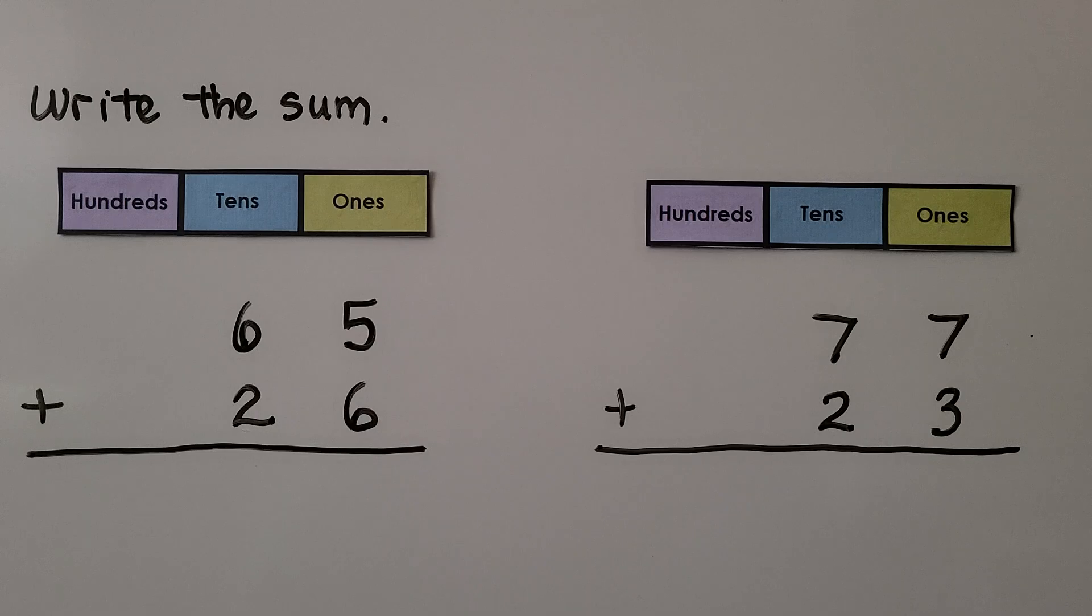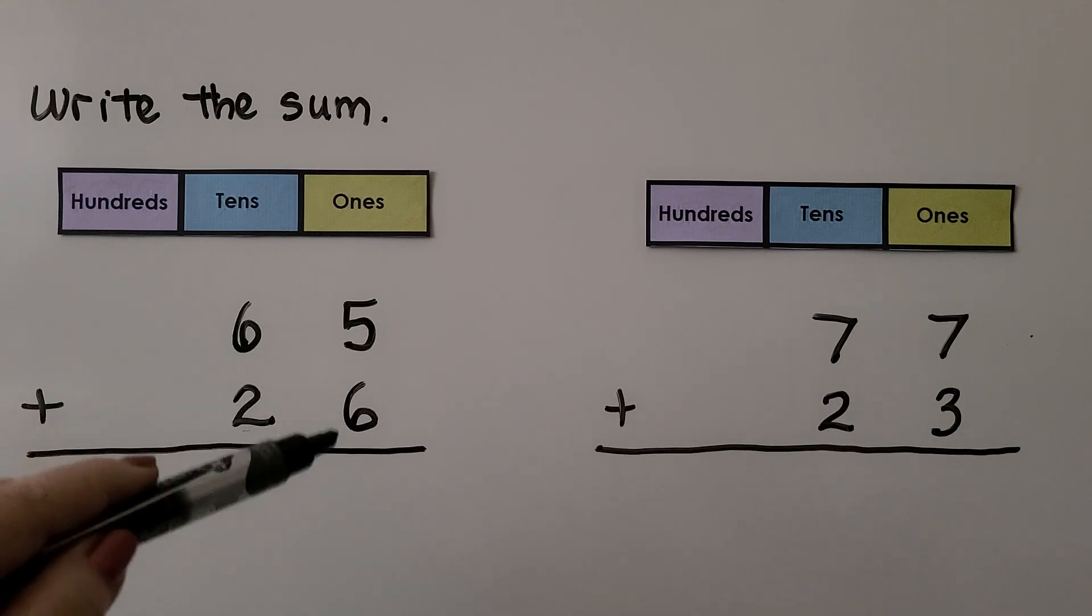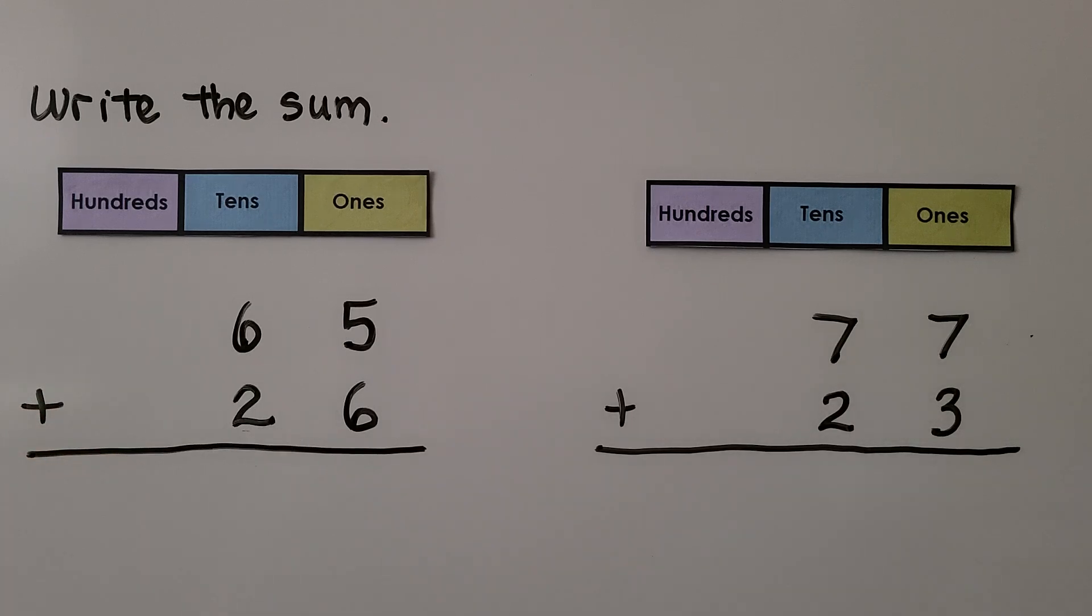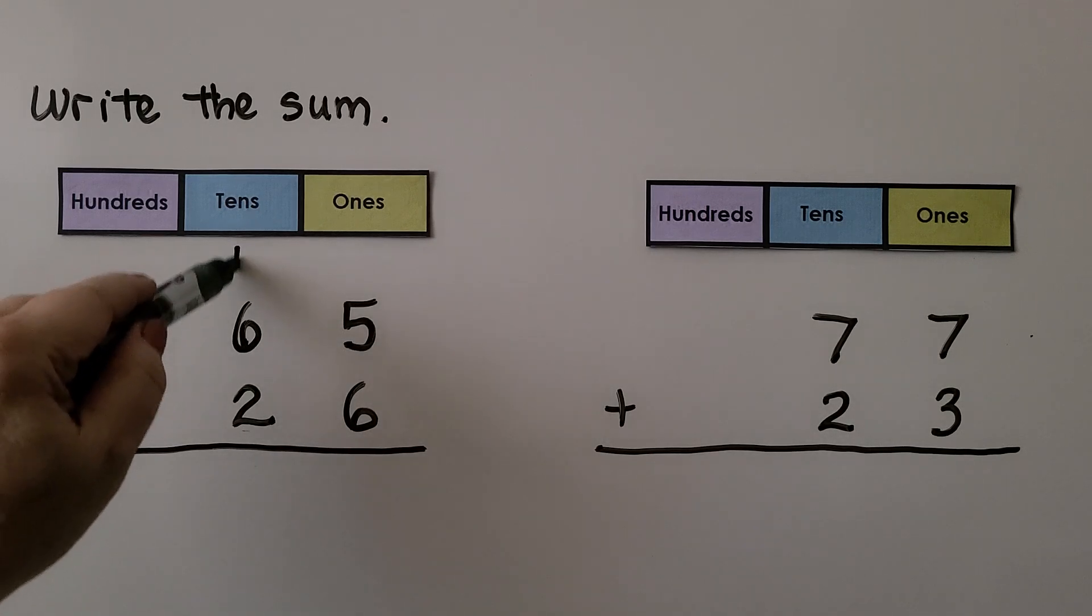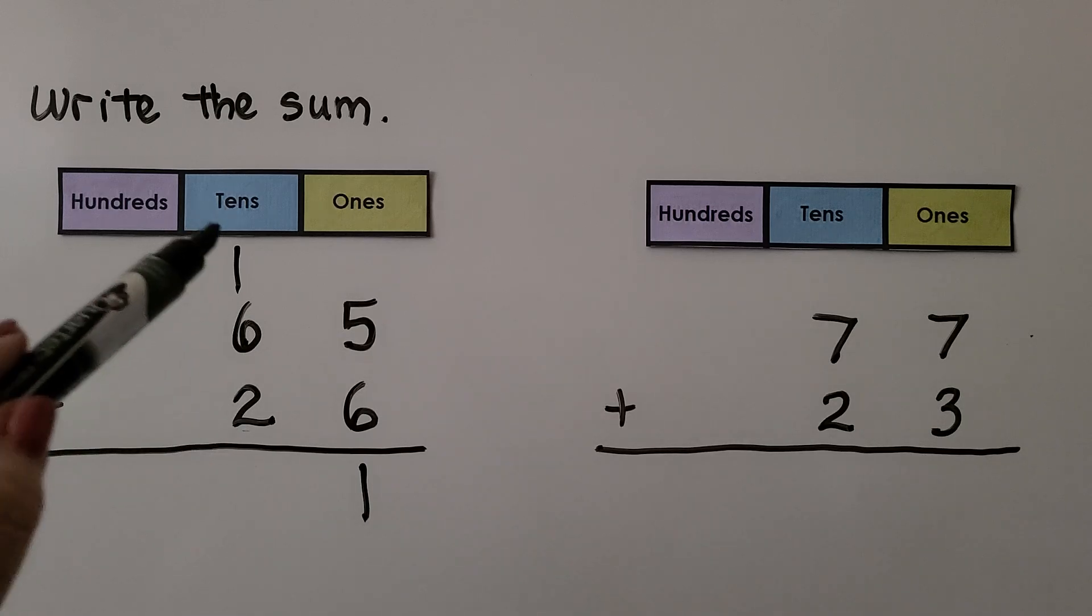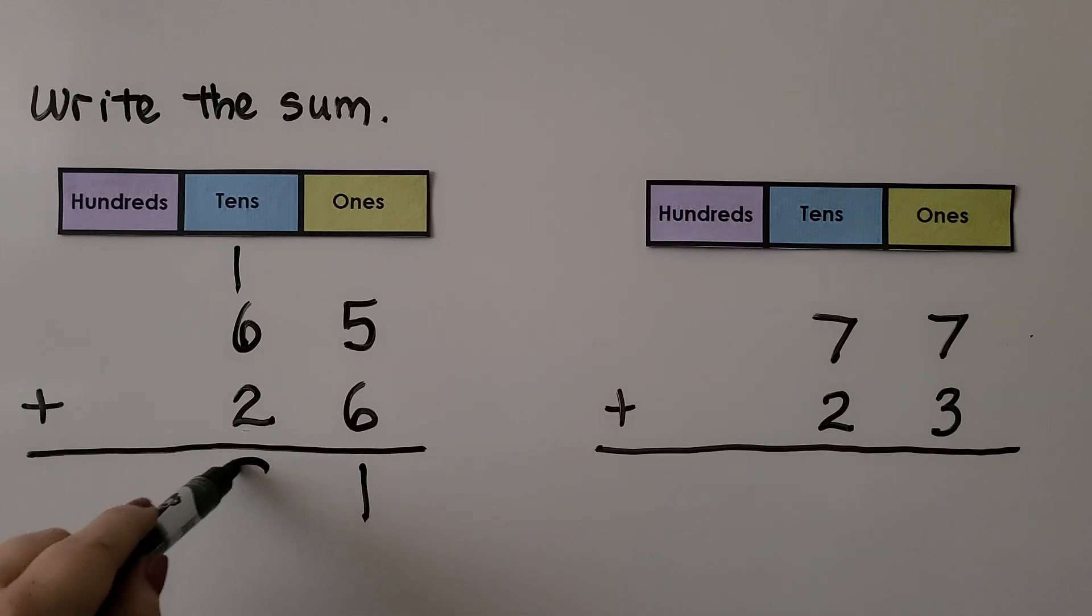Let's try it again. We need to write the sum. We start with the ones place: 5 + 6. We can think 5 + 5 = 10, and that would be one more, so that's 11, which is one ten and one one. We regroup the ten. Now we add the tens place: six, seven, eight, nine. So 65 + 26 = 91.